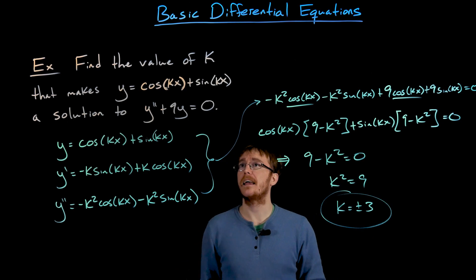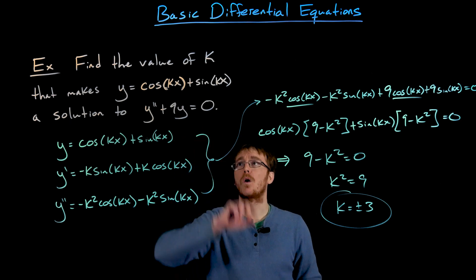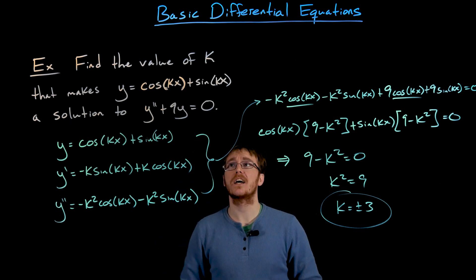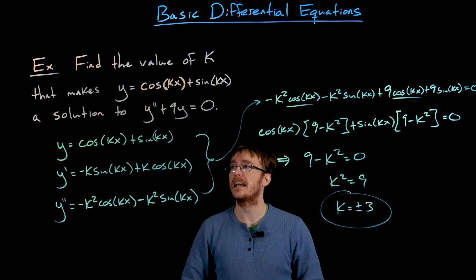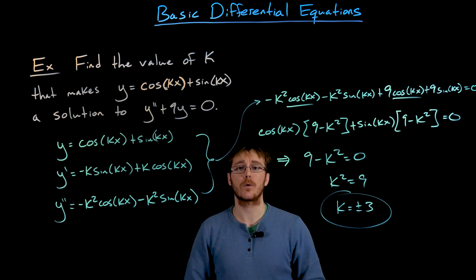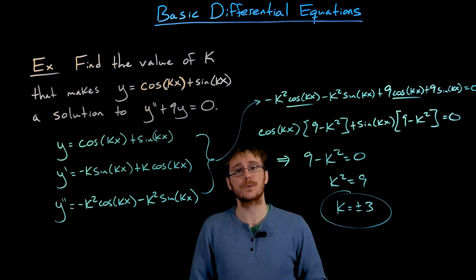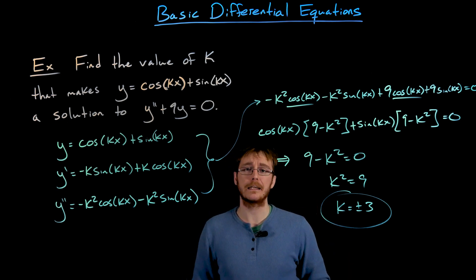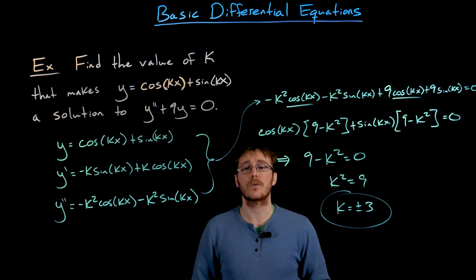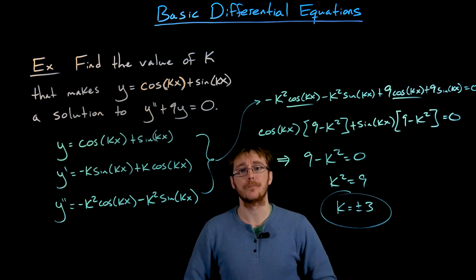So the values of k that make y equals cosine of kx plus sine of kx a solution to the second order differential equation are positive three or negative three.